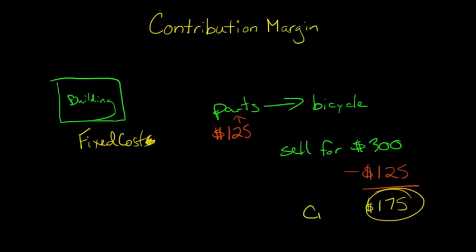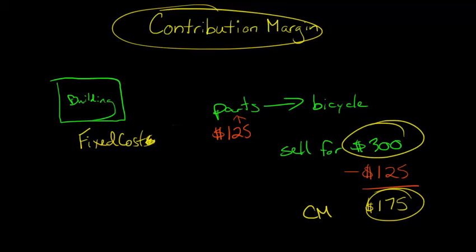Well, this is our contribution margin, and I'll just abbreviate it CM. So the contribution margin is basically after you take the sale price and deduct out all the variable costs.